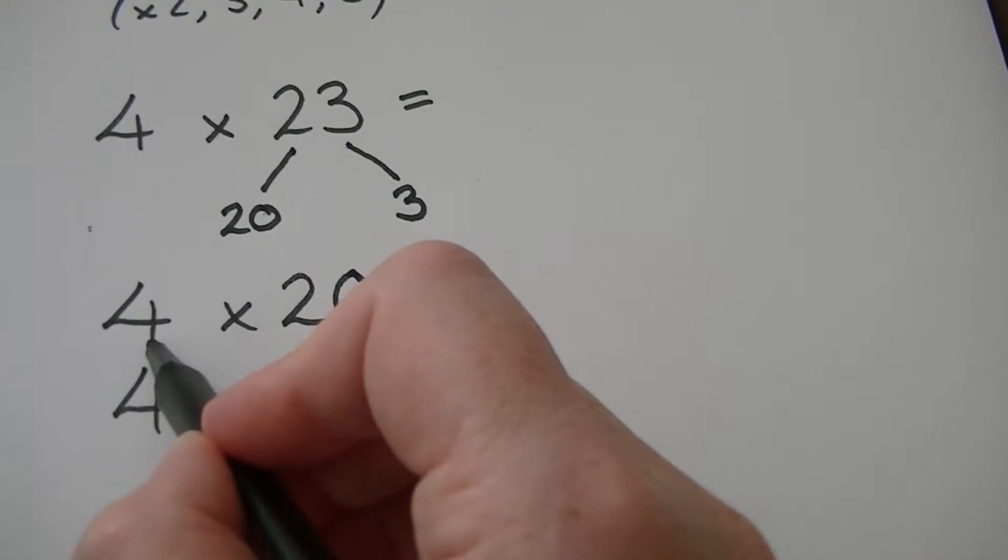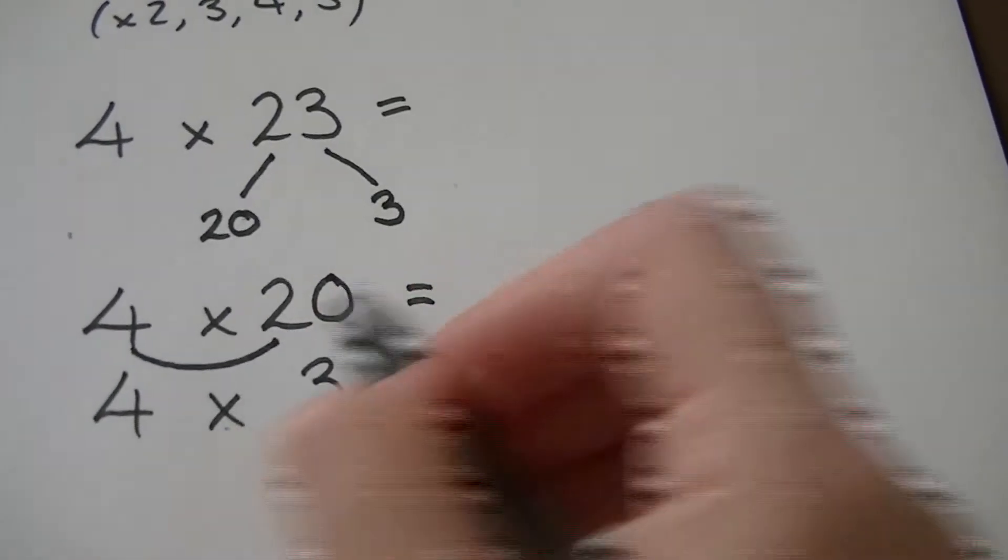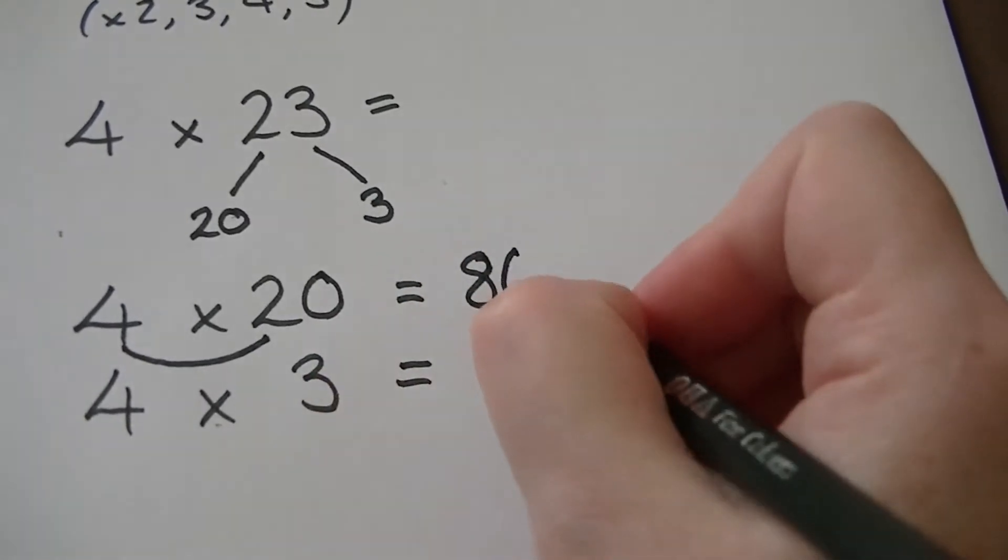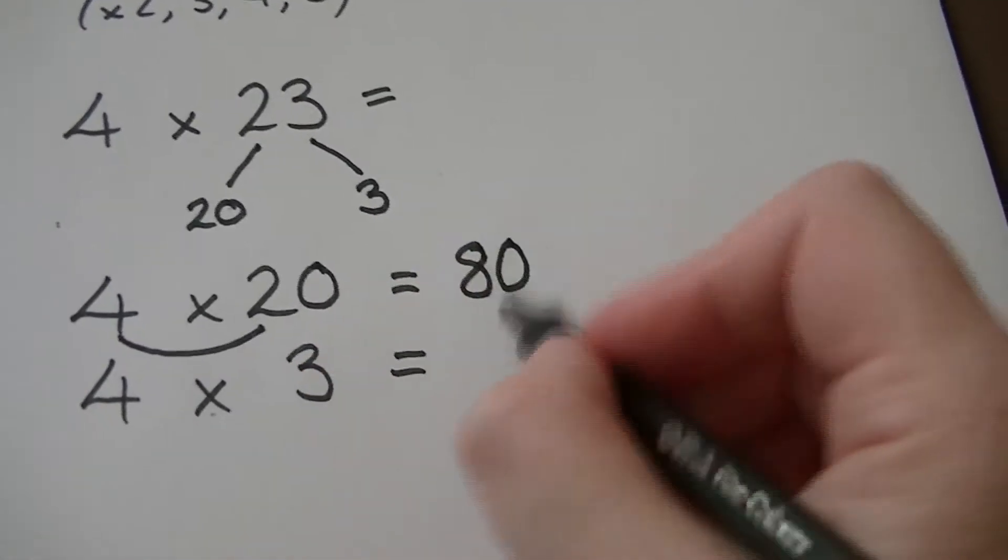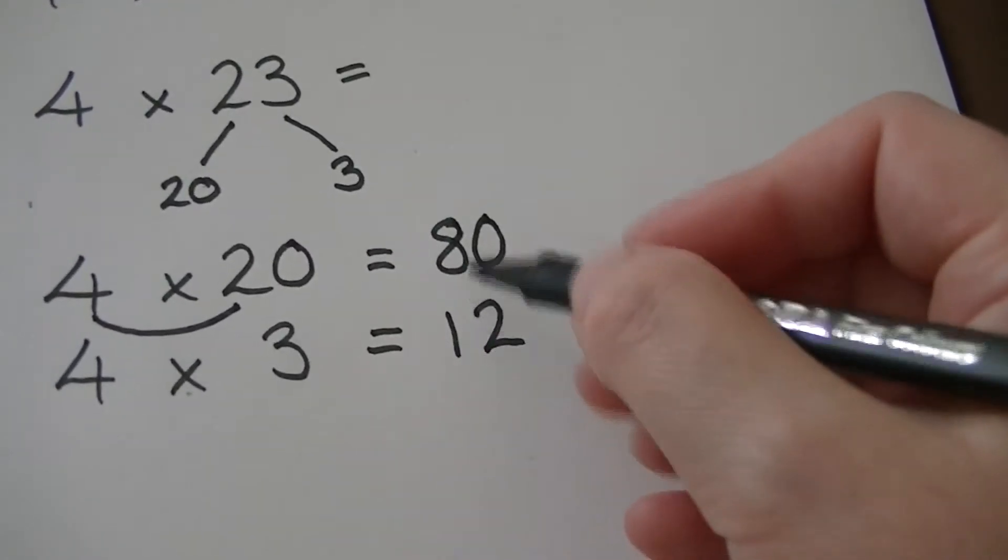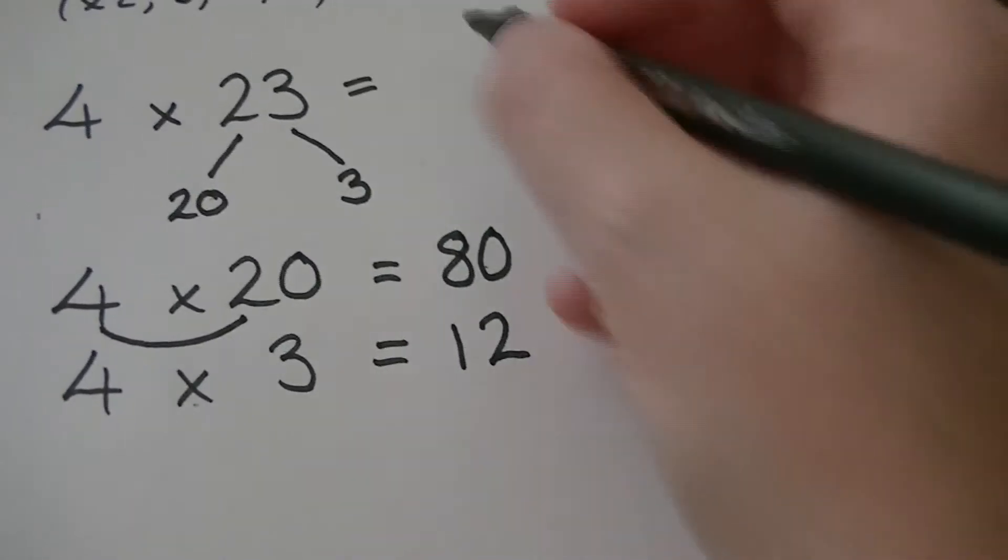We can use smile multiplication to help us do 4 times 20. 4 times 2 is 8. Put the 0 on the end. 4 times 3 is 12. Now we can add those two numbers together: 80, 90, 92.